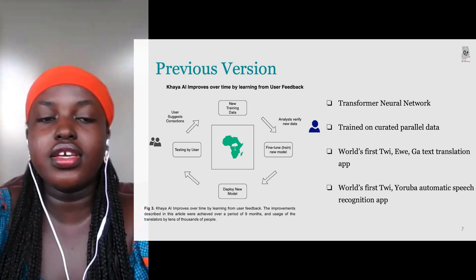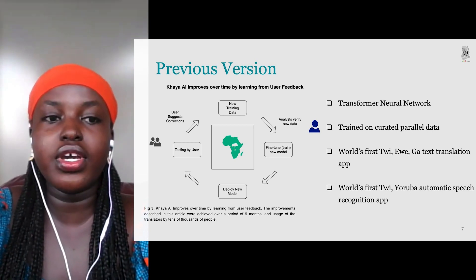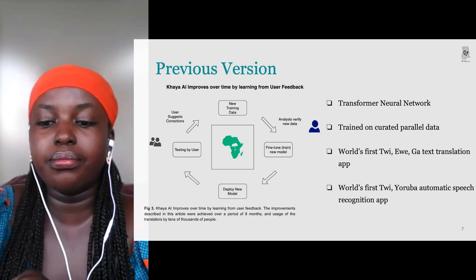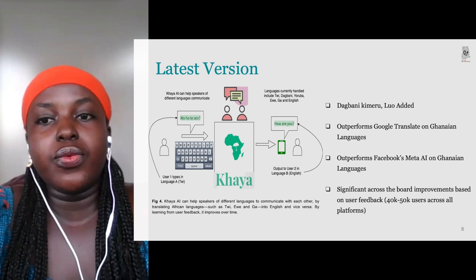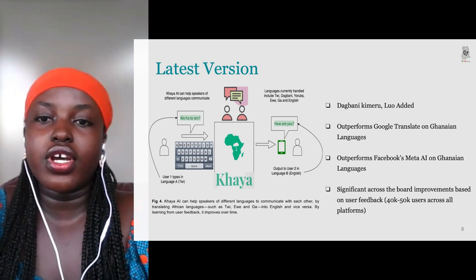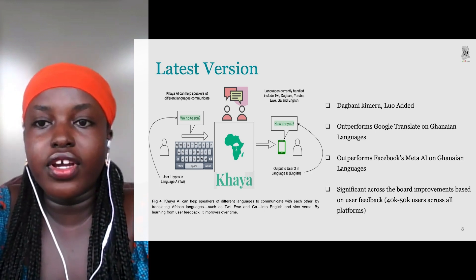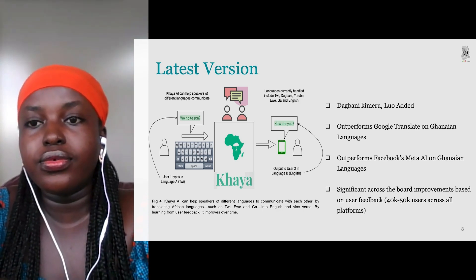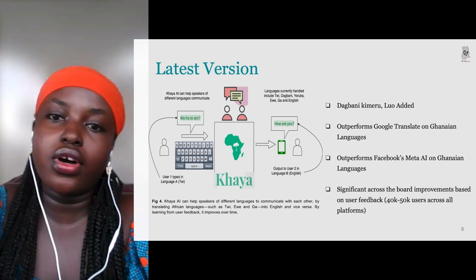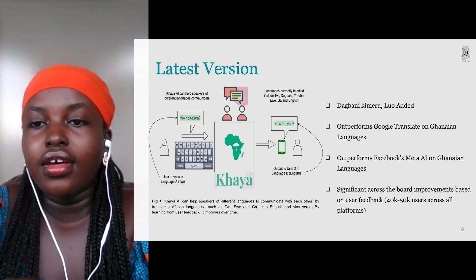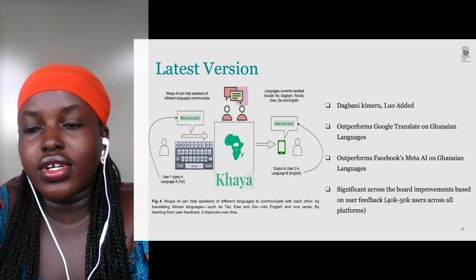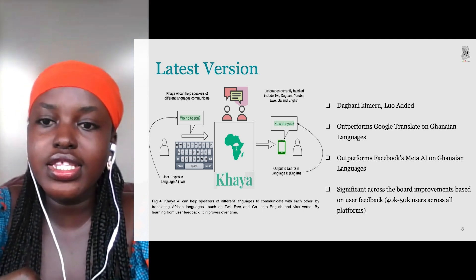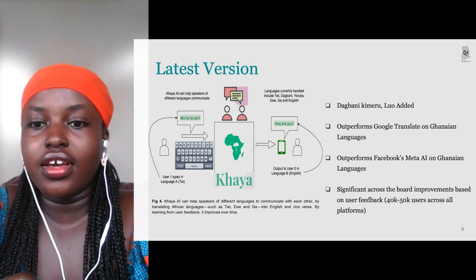Users test the system and suggest corrections to improve the translations. In our latest version, we're adding more African languages beyond Ghanaian languages — we added Dagbani, Kimeru, and Luo. We also compared our system to Google Translate, which was recently introduced, and found that our system outperforms it and also outperforms Meta AI on Ghanaian languages.